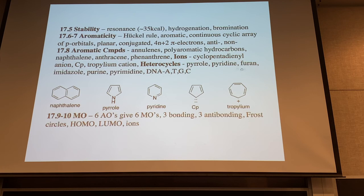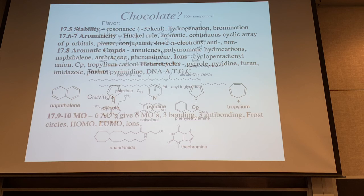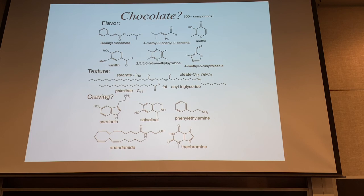Another reason we cover this chapter is the heterocycles: pyrrole, pyridine, furan, imidazole, uracil, and the pyrimidines which are in DNA. The purines and pyrimidines — adenosine, thymidine, guanine, cytosine — those bases on the side of the ribose in DNA and RNA are also aromatic. The theoretical basis for why these things are so stable is the Hückel rule, and we'll use the Frost circle approximation to see how that works and give a basis for why the 4n+2 rule holds up.